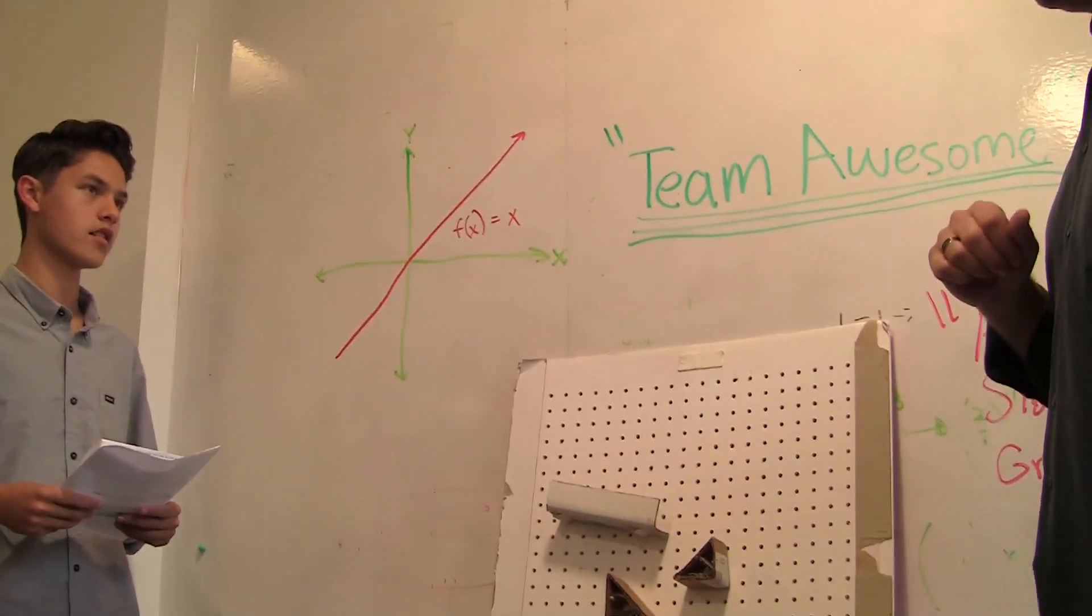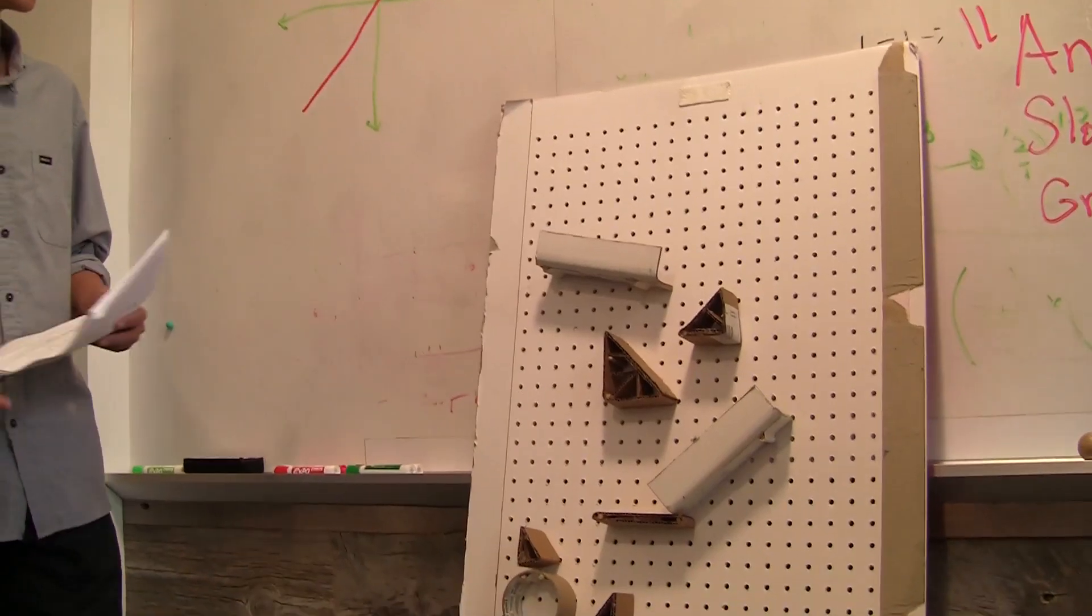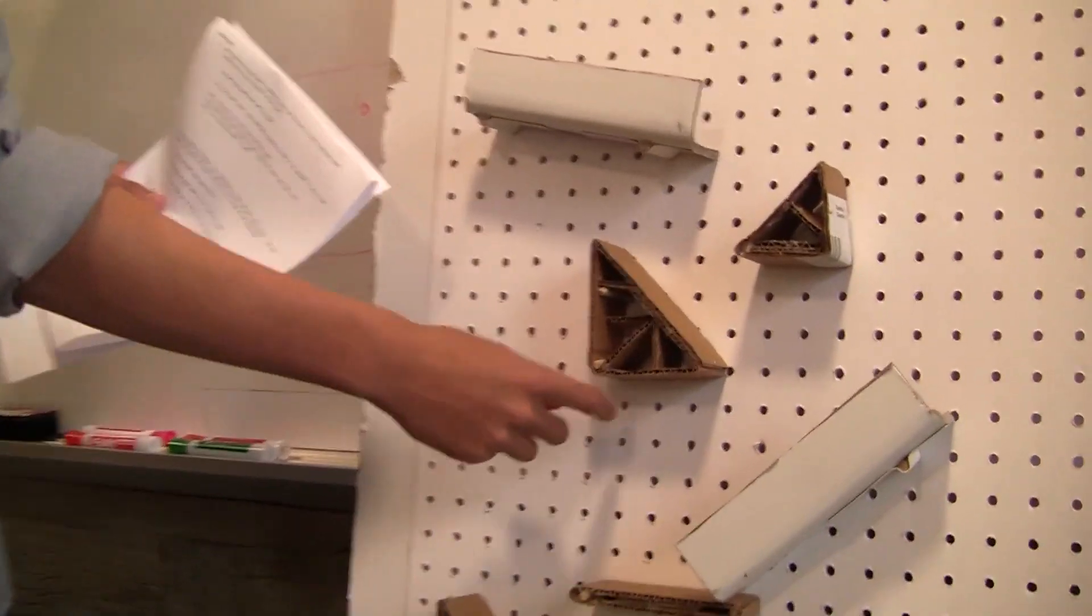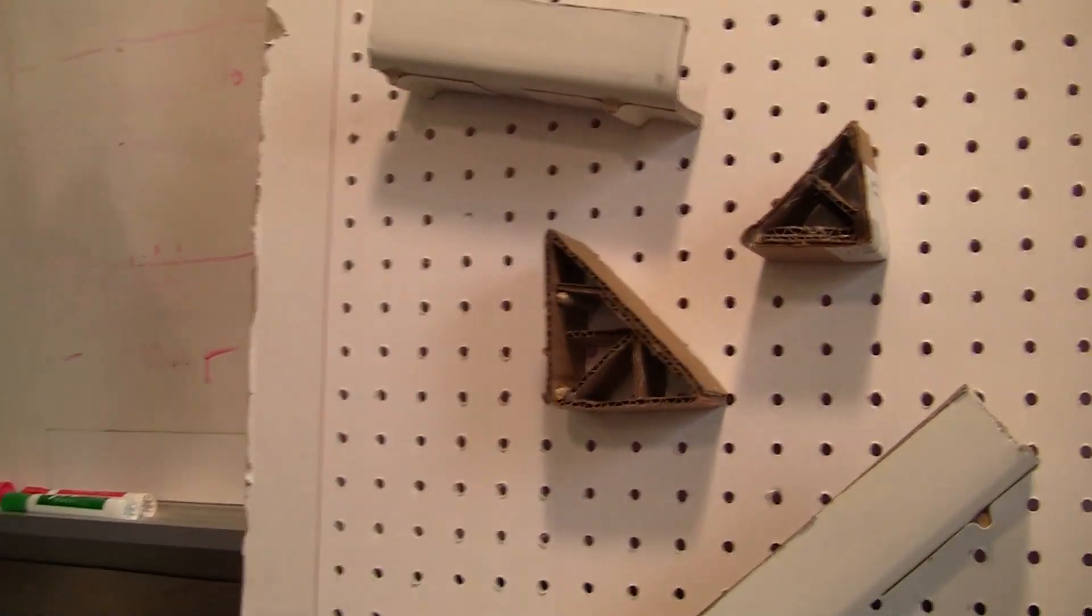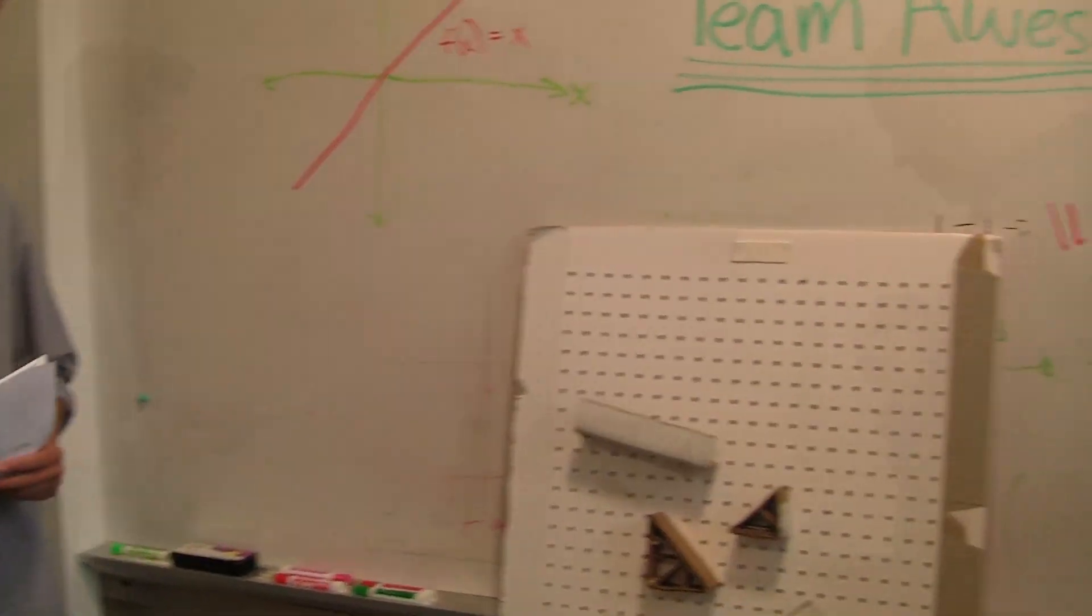All right, so I have a couple of slope math questions for you. Can you tell me the slope of that line? So because this piece goes down 3 and over 3, the slope would be negative 3 over 3, meaning that the slope would actually be negative 1. All right, very good.